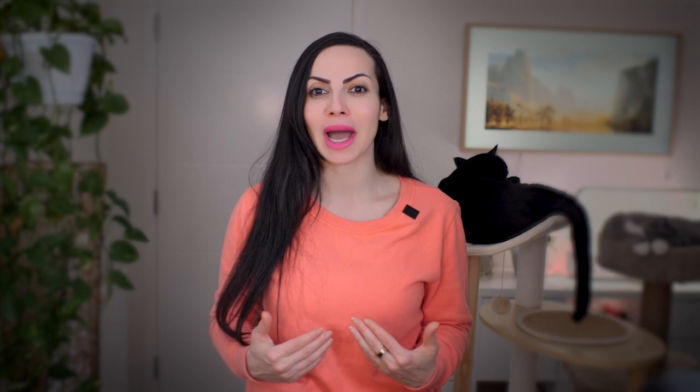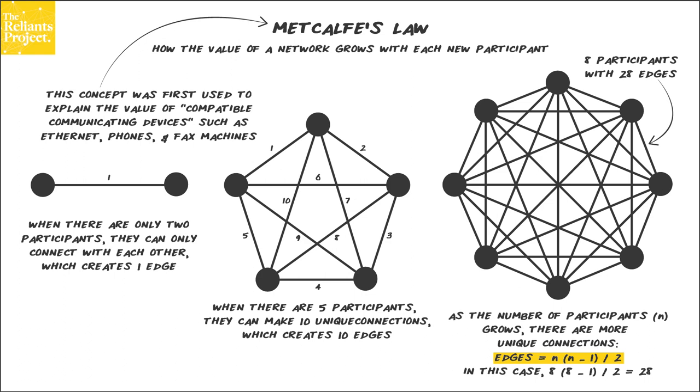Metcalfe's Law says that every time you add a new user to a network, the number of connections increases in proportion to the square of the number of users. If you look at these pictures, you will see that the first network only has two users, which creates one connection. The second network has five participants, which creates 10 connections. And the last one has eight participants and 28 unique connections.